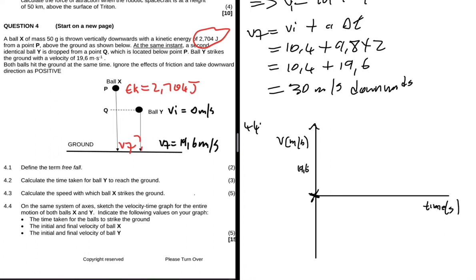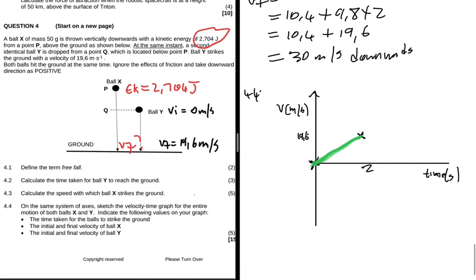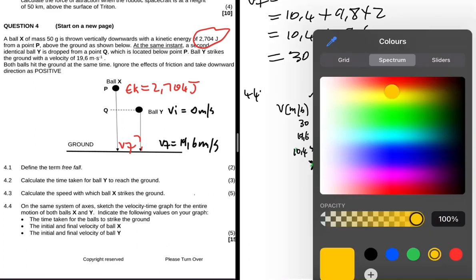For ball Y, how much time does it take? It takes 2 seconds, so we can put 2 here. Ball Y ends up here, so now we can have our v-t graph for ball Y. The line is supposed to be straight. Now let's put our attention to ball X. Let's start at 10.4, so somewhere here. It's starting at 10.4, that's the vi, and then it goes up to 30 meters per second, so it's ending up somewhere here.